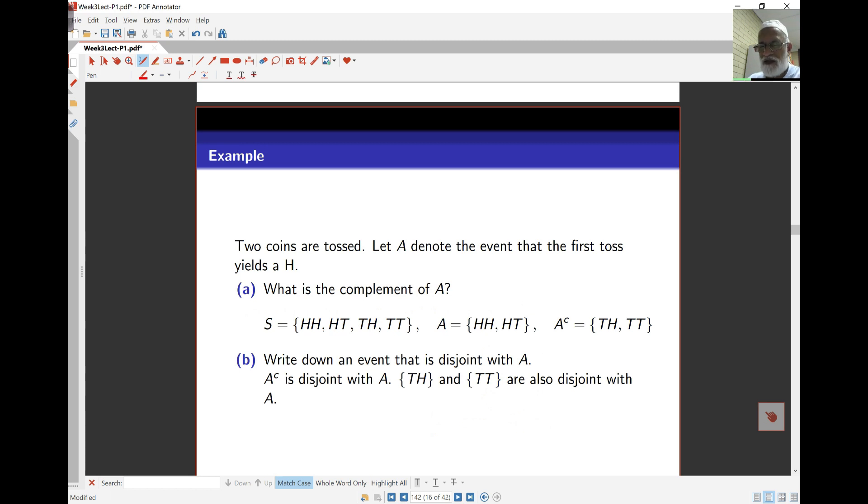Here are some examples. You just count things here. A denotes the event that the first toss yields a head. A is heads-heads or head-tails. The complement is that the first toss isn't heads, which is tail-heads or tail-tails. Write an event that's disjoint with A. We know A and A complement are disjoint, but also anything not in A will be disjoint with A. For example, the set tail-heads is disjoint with A, and tail-tails is also disjoint with A.